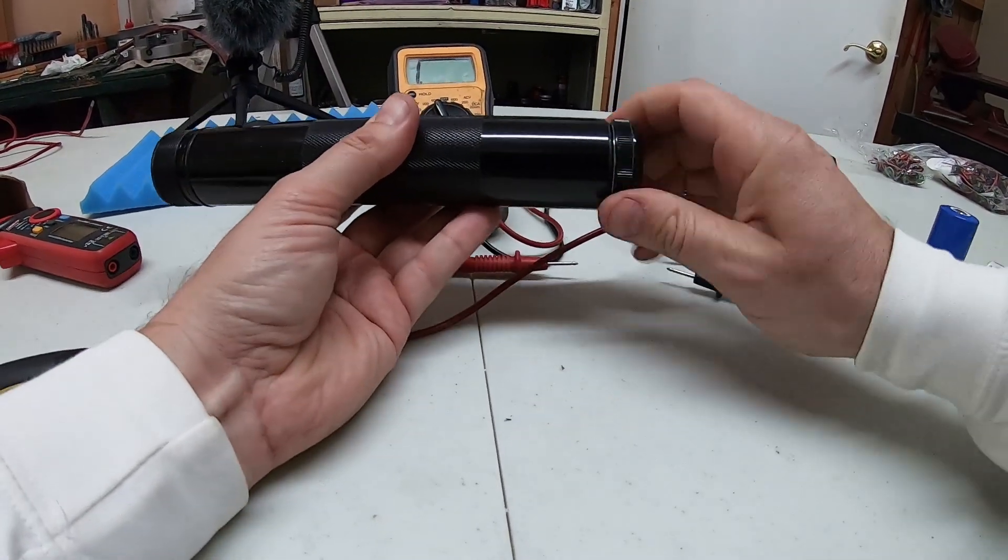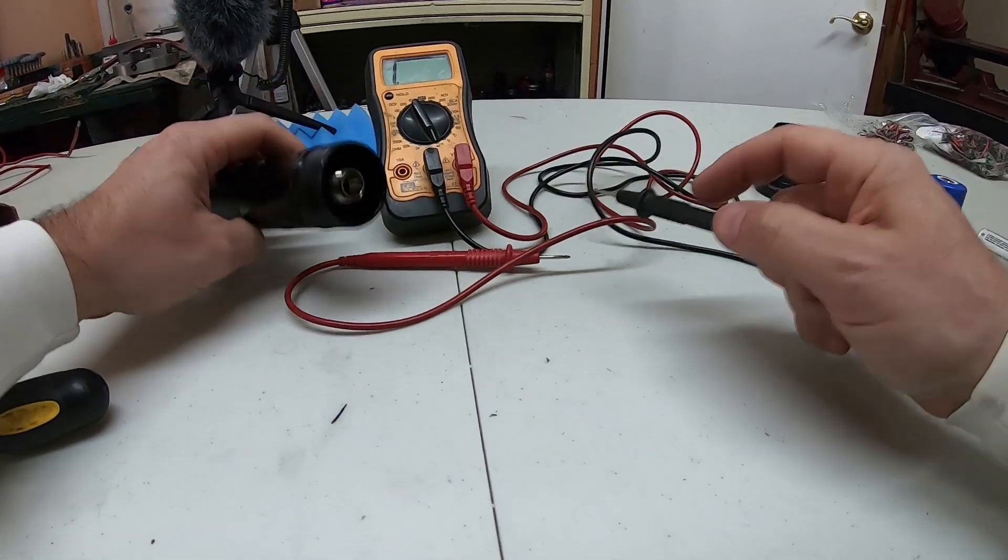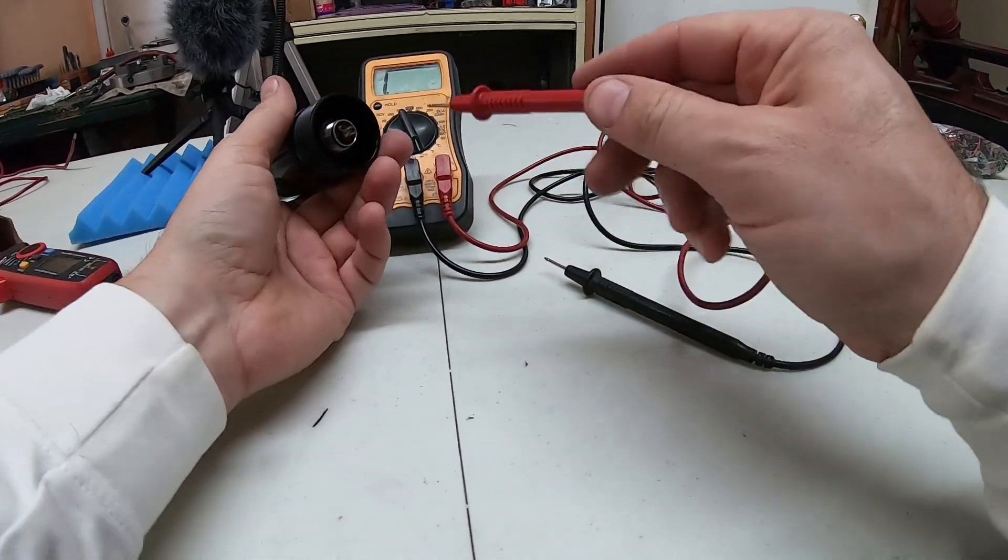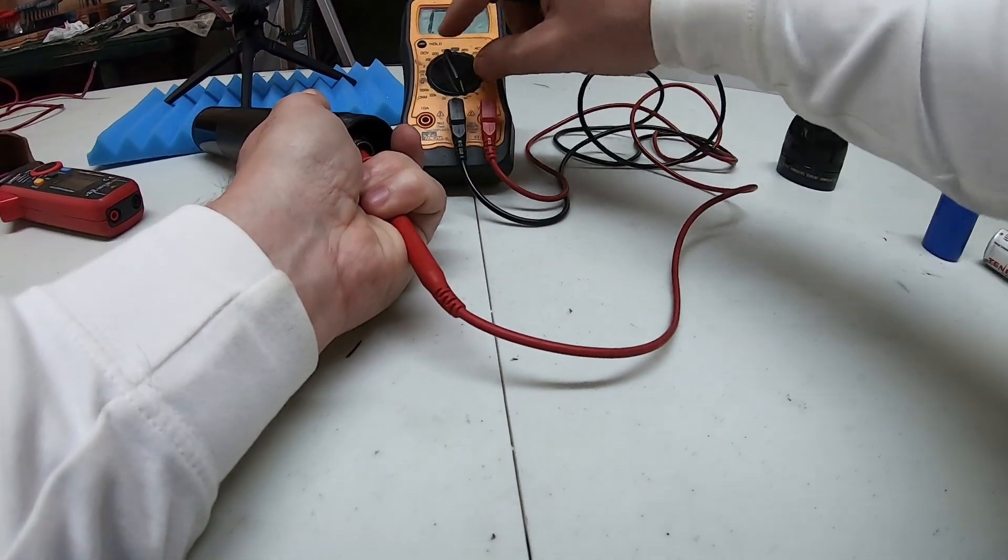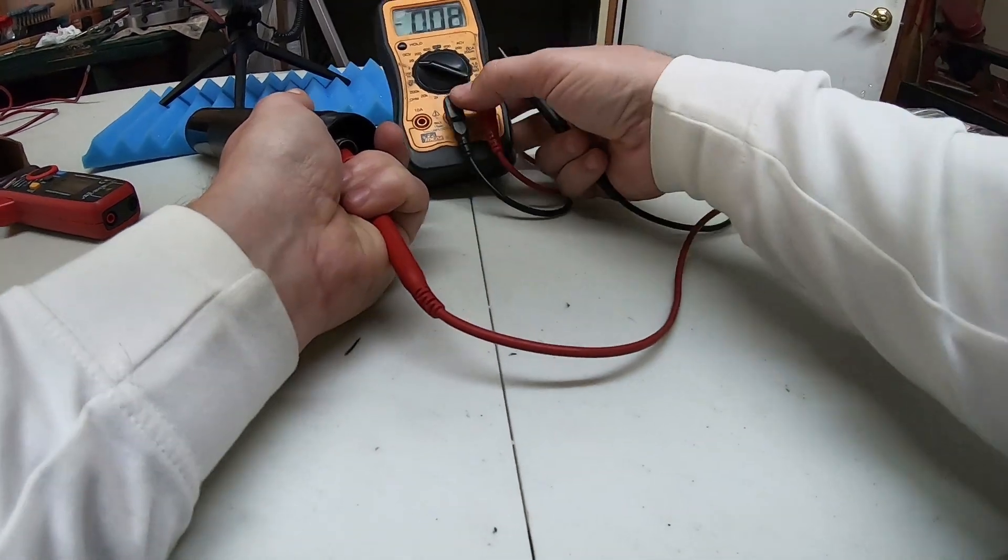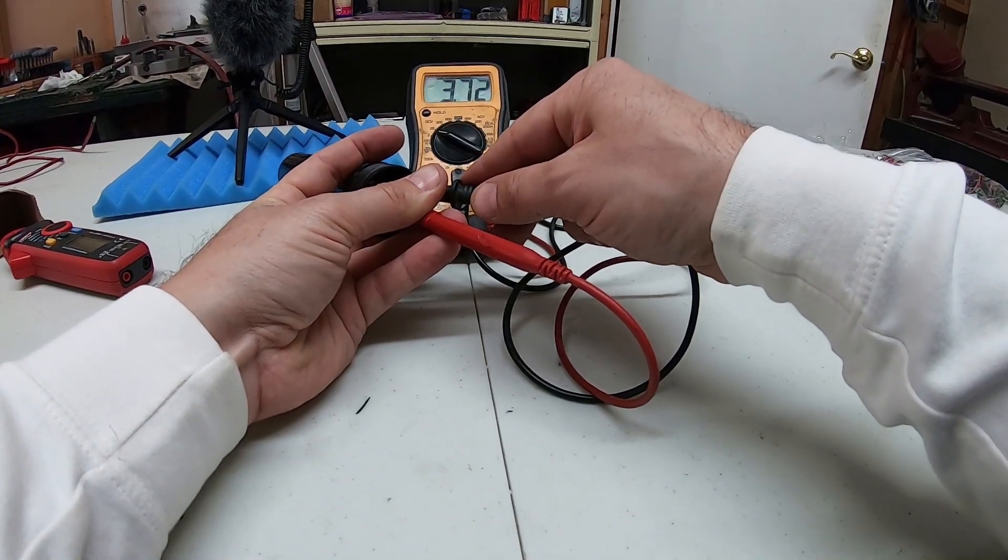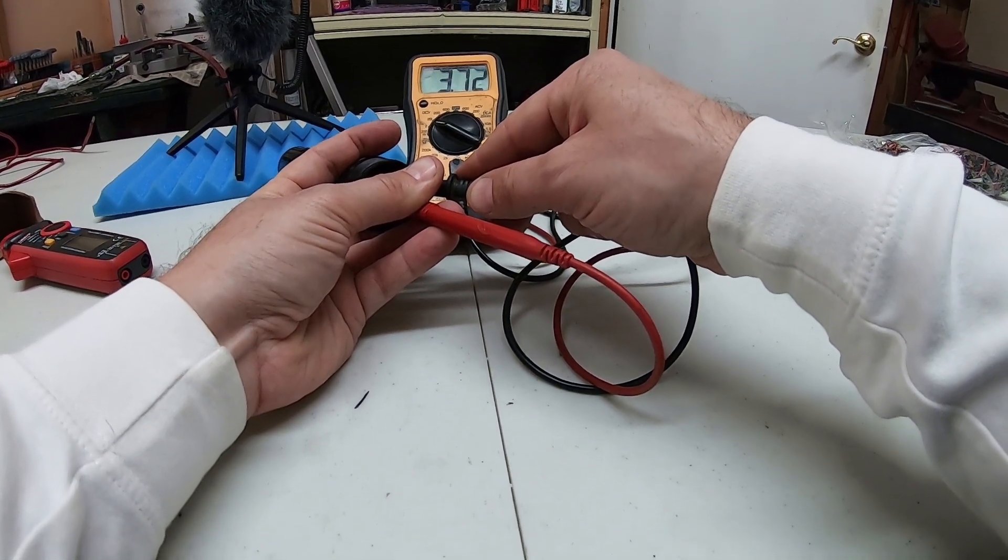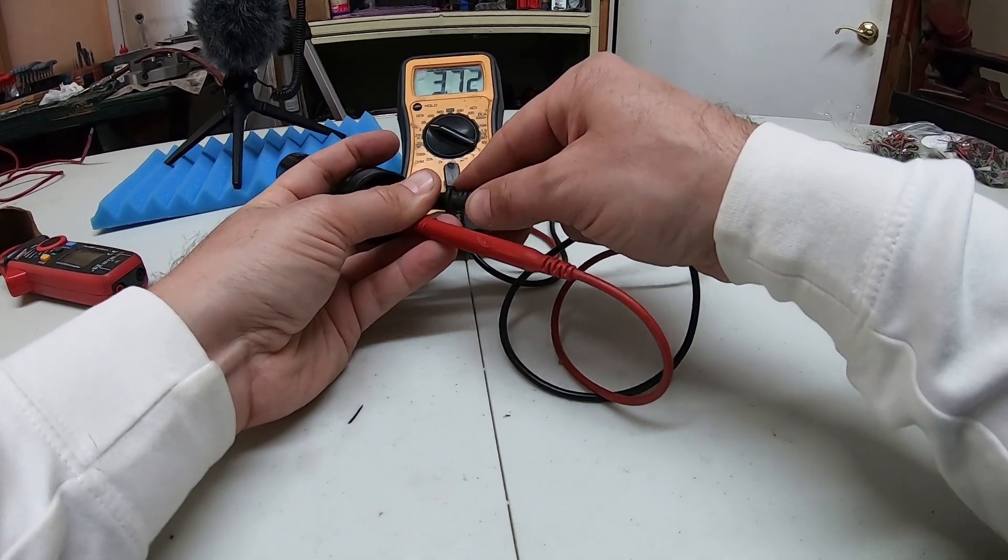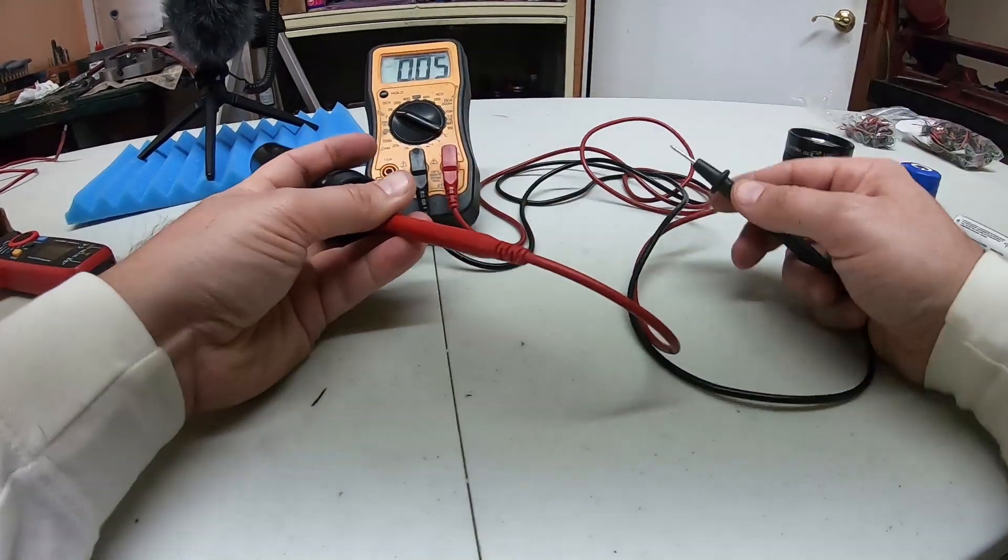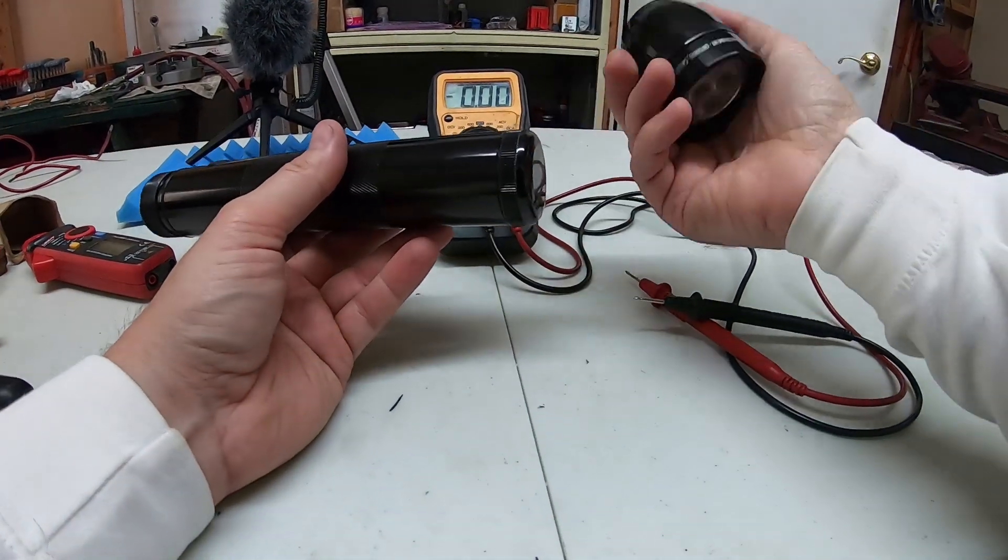Now we screw this back on, turn our switch on, and we'll try checking voltage again in here. After we switch back to the voltage, we're going to go with 20 volts because I'm expecting to get around 8. And, oh, that's no good. We're getting only 3.72 volts.